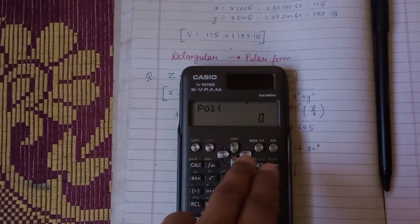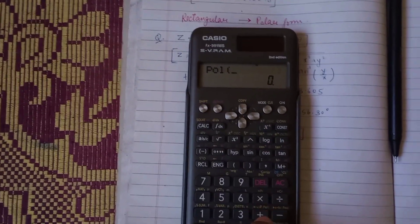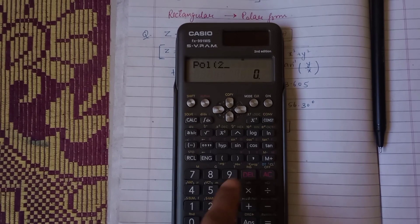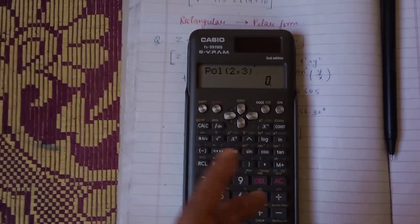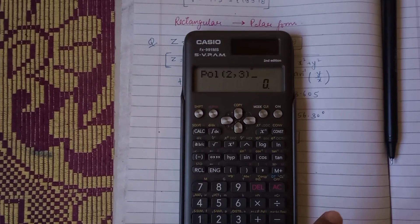We input the values by pressing 2 comma 3 according to our question, then close the bracket.